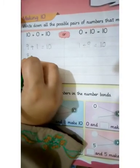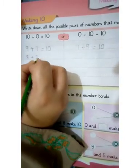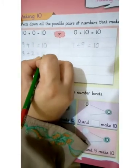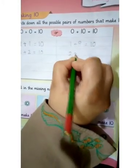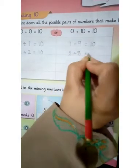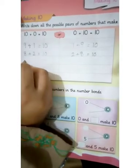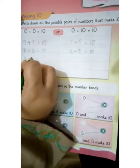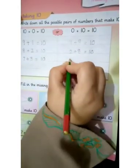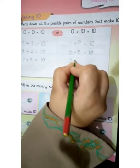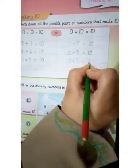8 plus 2 make 10. 2 plus 8 make 10. 7 plus 3 make 10. 3 plus 7 make 10.